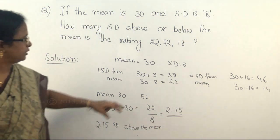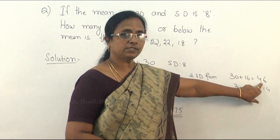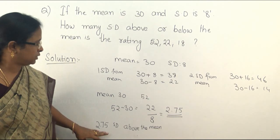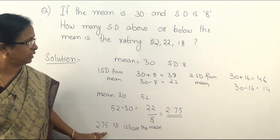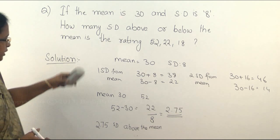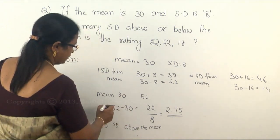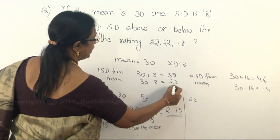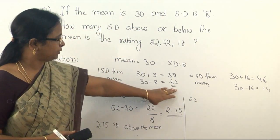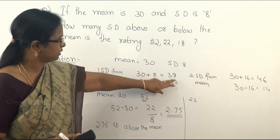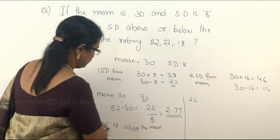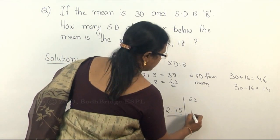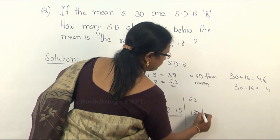Since 2 standard deviations above the mean is 46, and 52 is greater than 46, it is more than 2 — specifically 2.75 standard deviations above the mean. For 22, we already found that it is exactly 1 standard deviation below the mean, since 30 minus 8 equals 22. So for 52 it is 2.75 above, and for 22 it is 1 standard deviation below the mean.